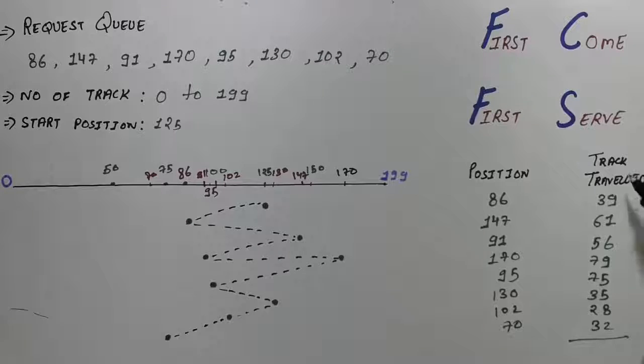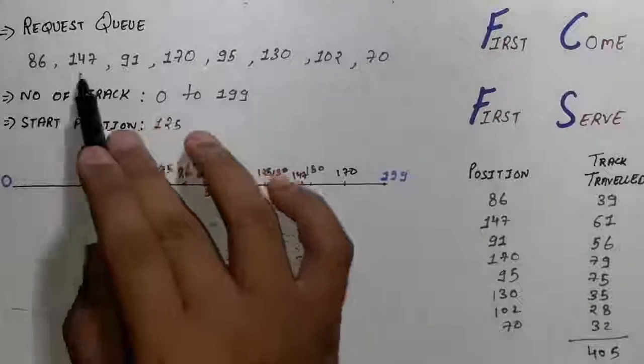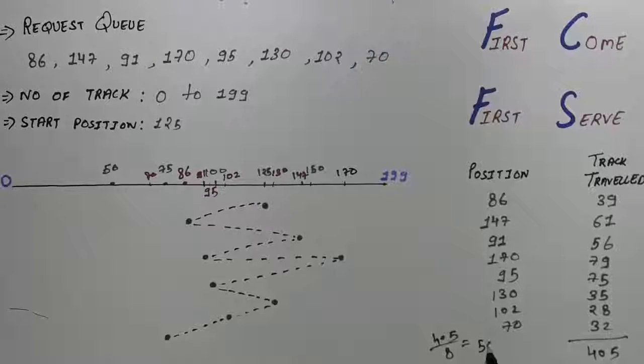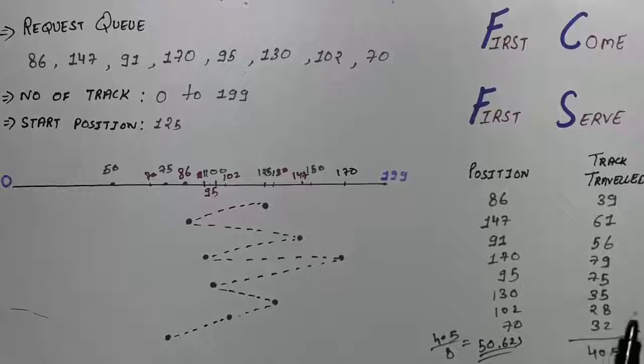So now the total track traveled is 405 and to find the average we have to calculate the total number of requests. So 1, 2, 3, 4, 5, 6, 7, 8 and divide this 405. 405 divided by 8 and the answer will be 50.625. So this is the average track traveled.